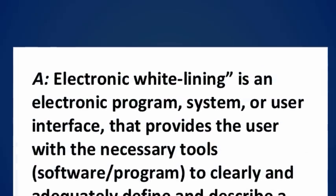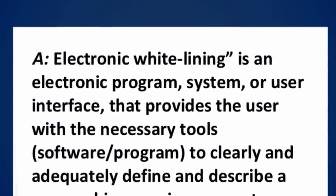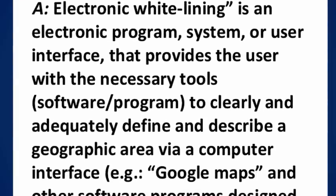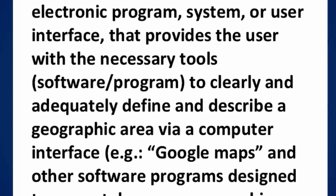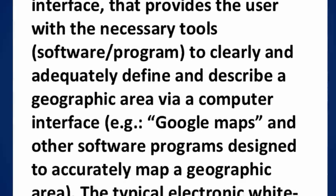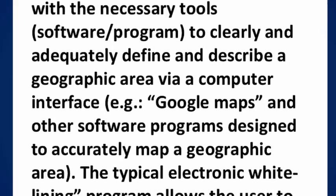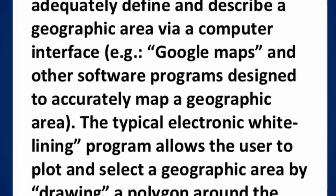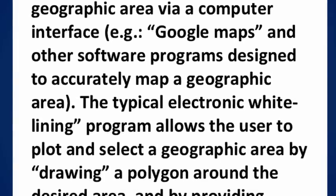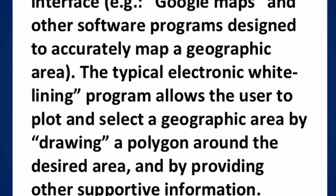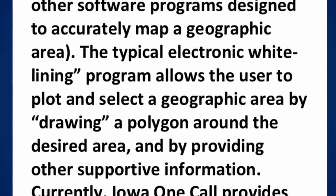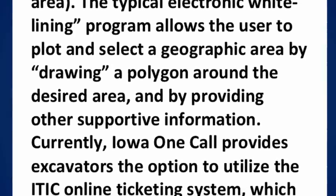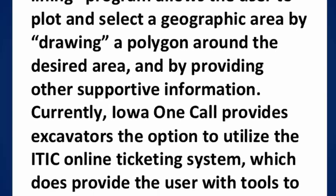Electronic White Lining is an electronic program system or user interface that provides the user with the necessary tools, software or programming to clearly and adequately define and describe a geographic area via a computer interface. For example, Google Maps and other software programs designed to accurately map a geographic area. The typical electronic white lining program allows the user to plot and select a geographic area by drawing a polygon around the desired area and by providing other supportive information.